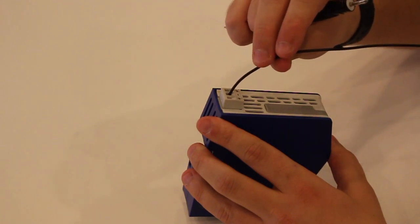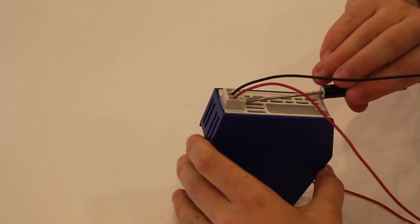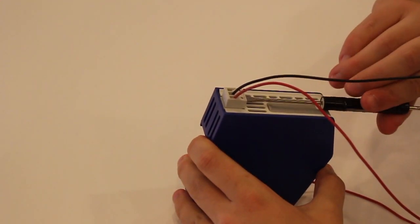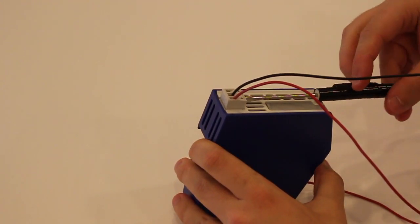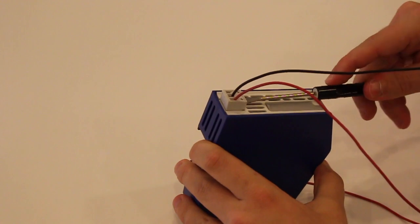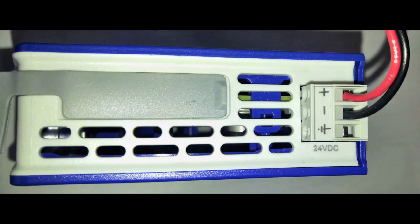We'll start by installing the power connector. To perform this part of the installation, you will need a small standard screwdriver. The BW4031 DC power supply requirements are 7 to 40 volts DC with the typical voltage being 24 volts DC. Locate the 3-position terminal block connector and connect the DC plus and DC minus wires to the connector.